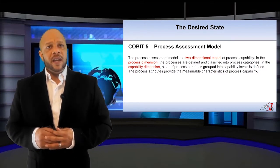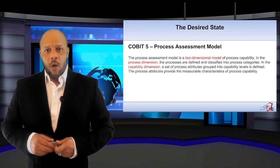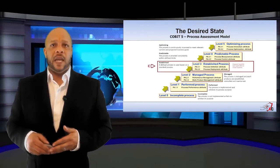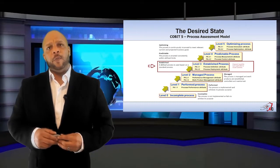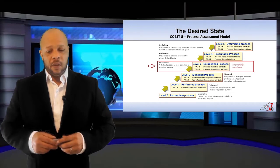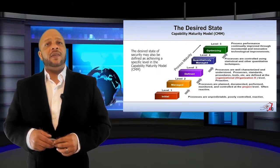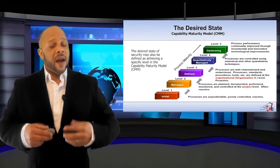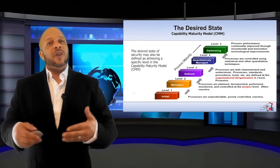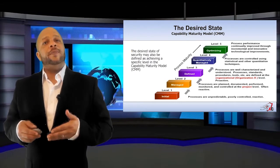A tool we use to navigate towards our desired state is a process assessment model. The COBIT process assessment model is a two-dimensional model: the first dimension is the process, and the second is capability. As the process matures, the capability matures with it. Another commonly used process assessment model is the CMM, or Capability Maturity Model, which has five defined levels dealing with process maturity — from initial all the way up to optimizing.